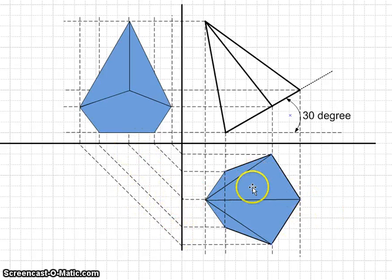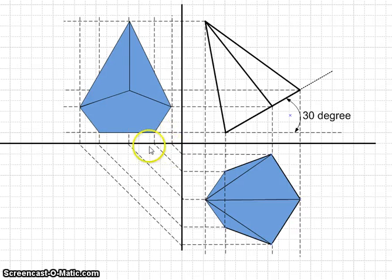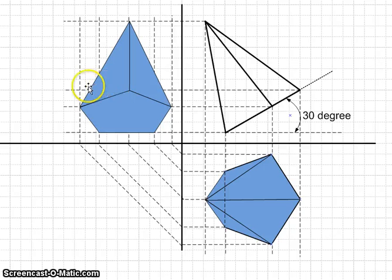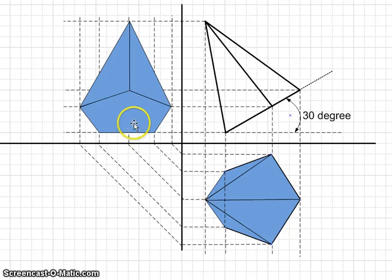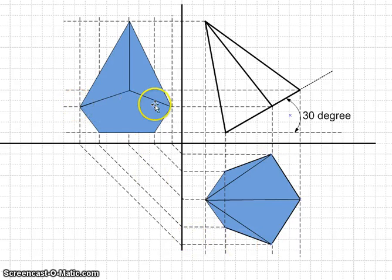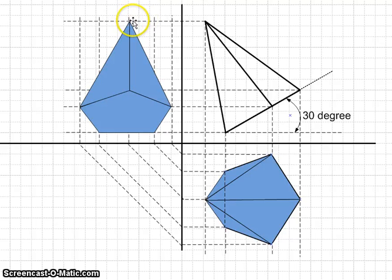You start with the front view first, then the top view, and extend all the lines. From the top view and side view, you draw the pentagon using the extended lines. This edge and the second edge give the height of the pentagon, and this one gives the width of the pentagon from one end to the other.